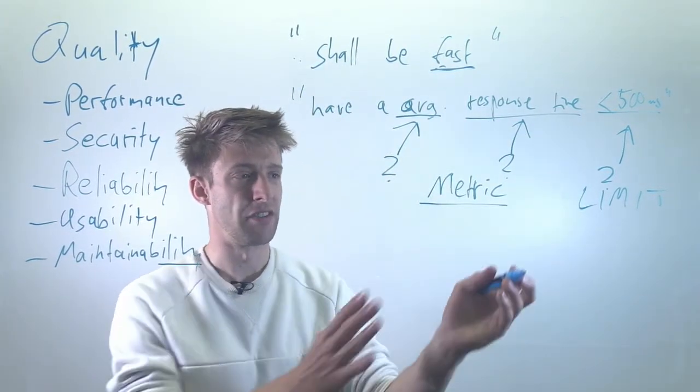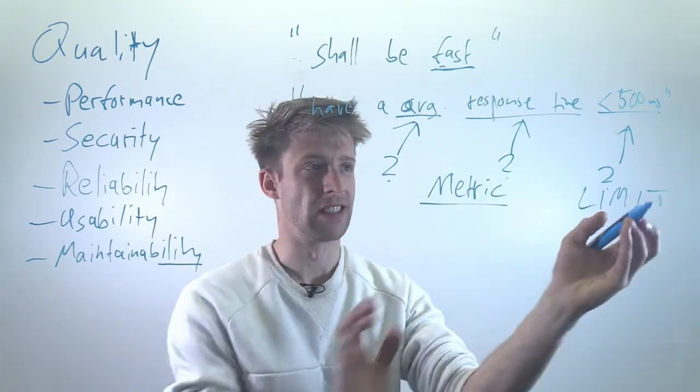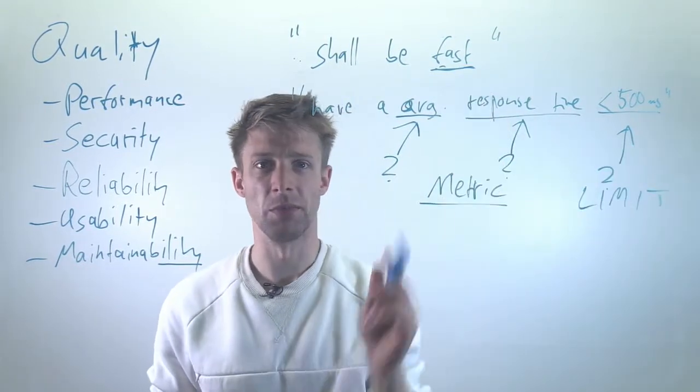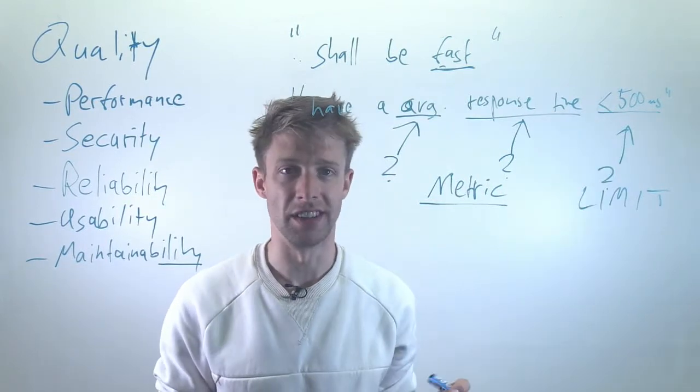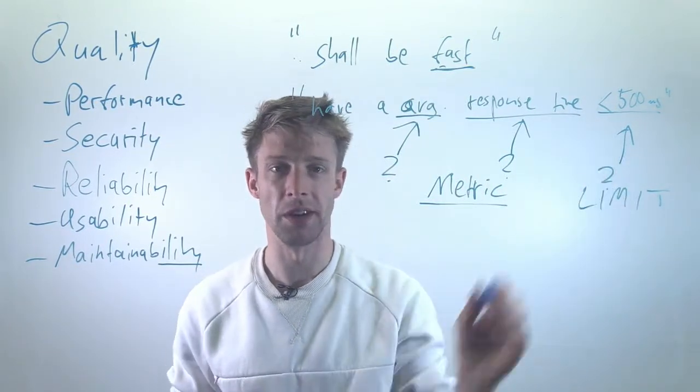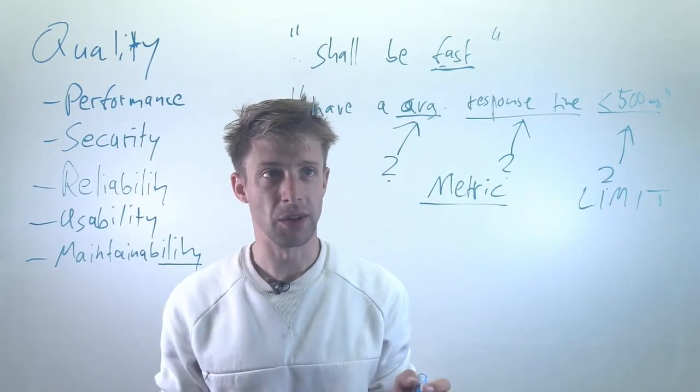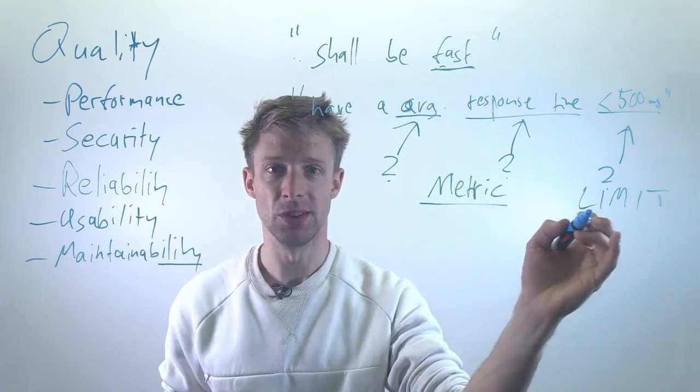And this is indeed in practice probably one of the hardest things. I've heard stories of companies that said we need to have this limit because everyone writes 'fast.' So they just in their tool put a default there and say if you don't know what to enter, it will be 200 milliseconds. And then, of course, every requirement ended up being 200 milliseconds because no one could decide what this should be.